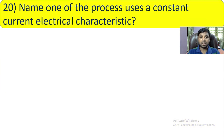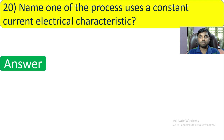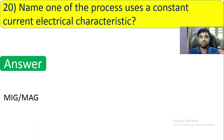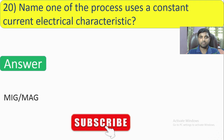Question number 20: Name one process that uses a constant current electrical characteristic. This may seem simple but is easy to forget. The answer is MIG-MAG welding.